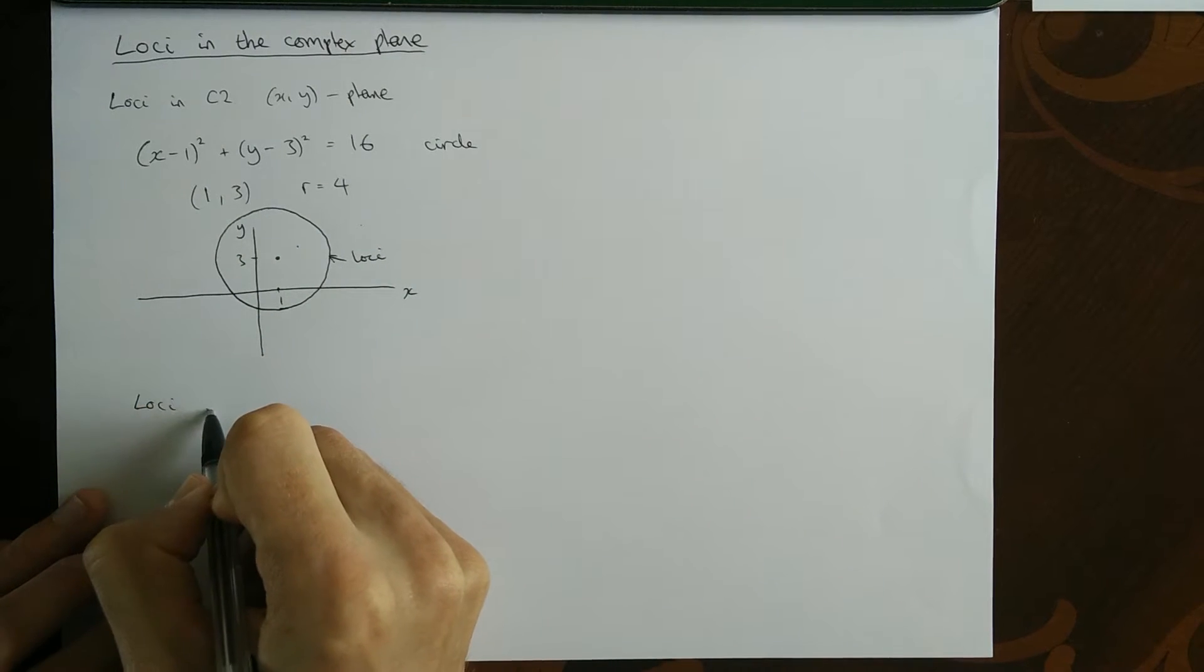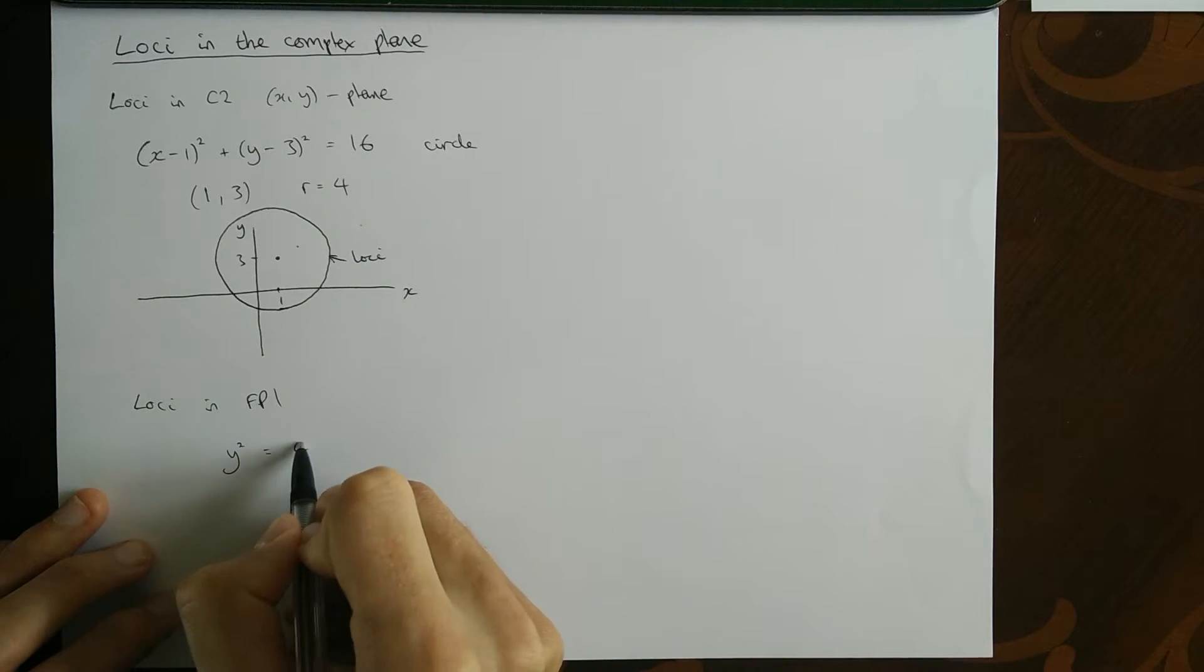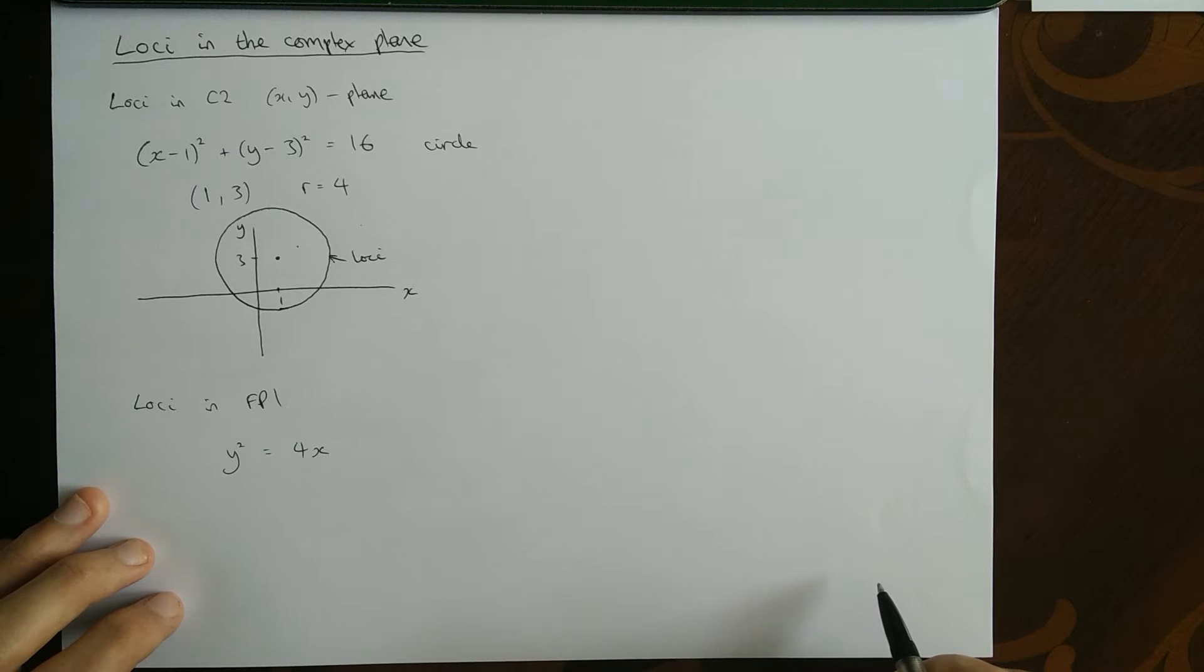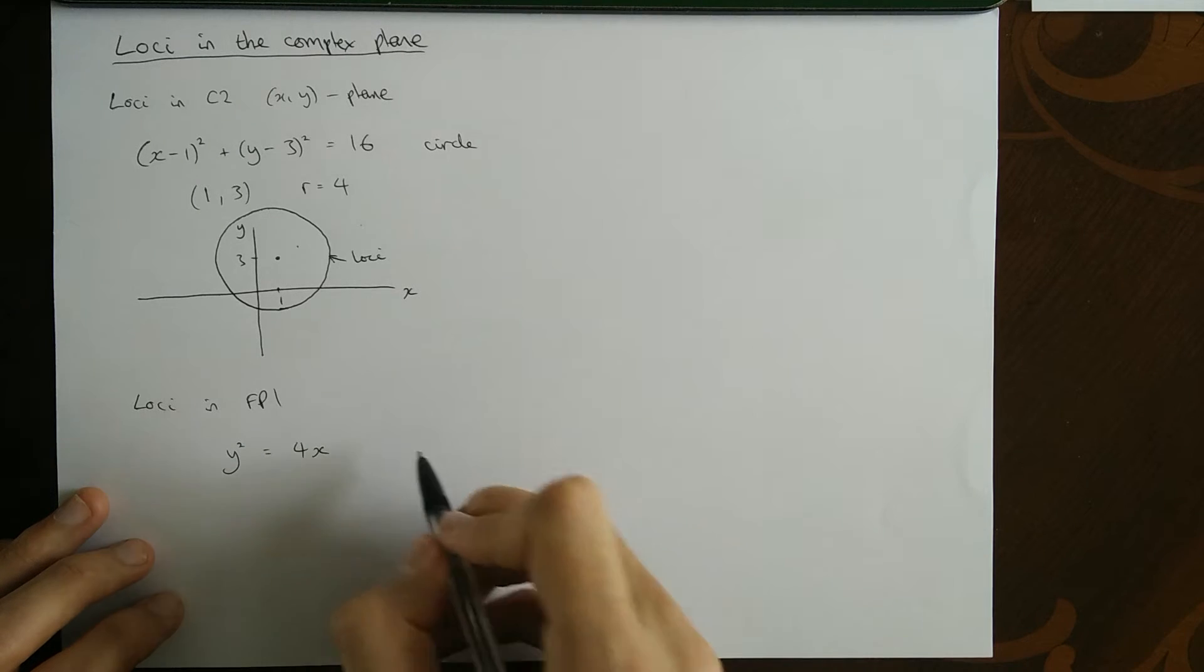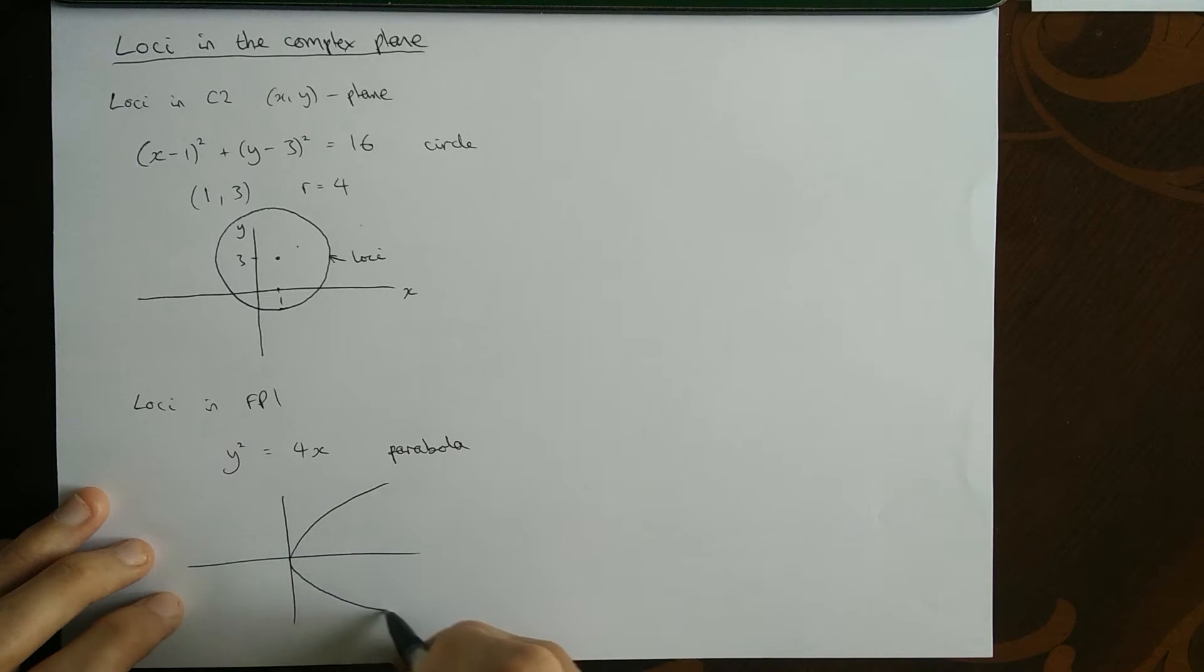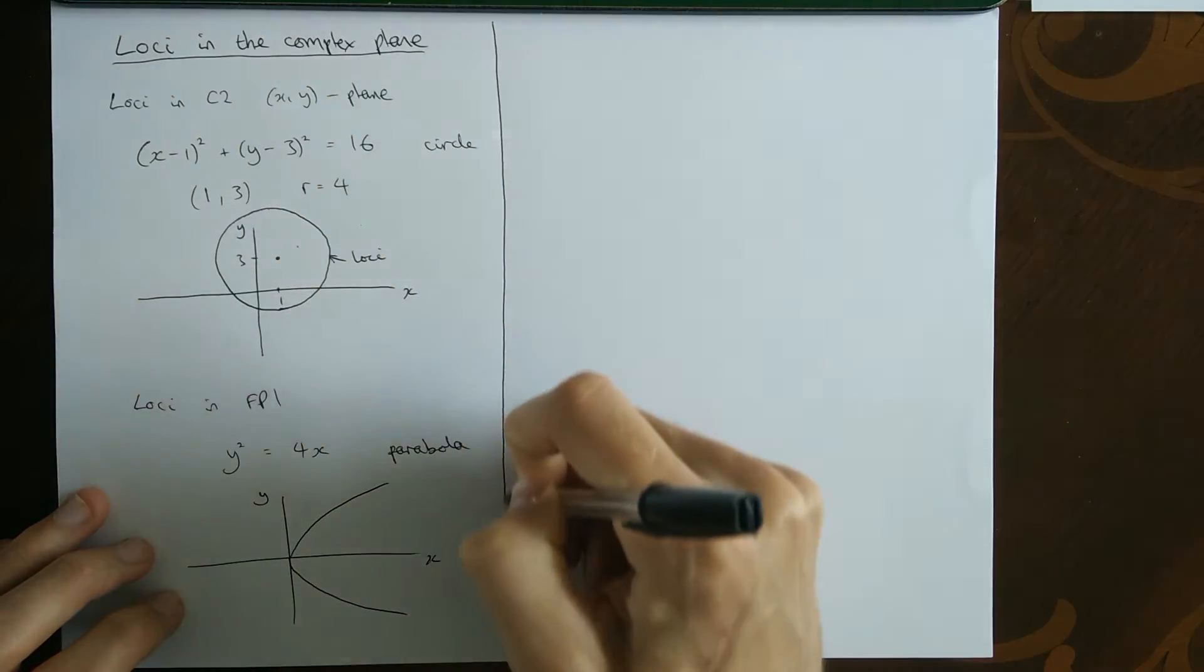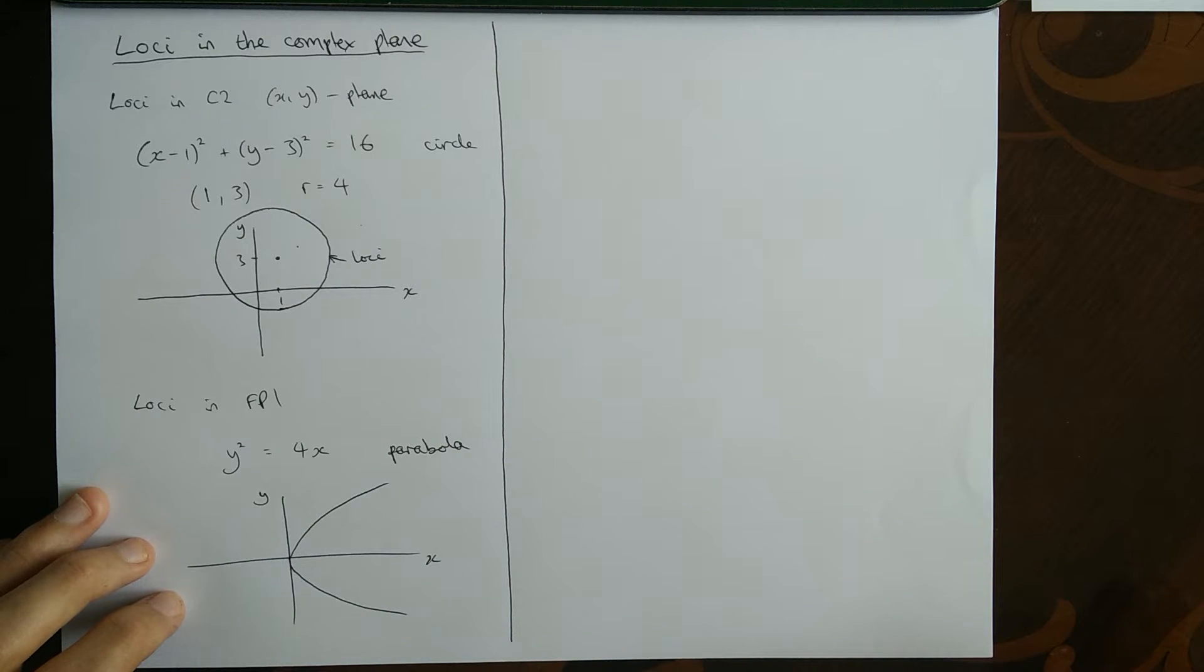Then loci in FP1 as well. You've done something along the lines of y squared equals 4x. Do you recognize what that is? Yeah, that's the equation of a parabola. So I can draw that down. Looks a bit like this. It's kind of like an x squared curve, but because you've got the y squared, it's on its side, right? It's more like a y squared curve. You may know just about the focus and directrix and stuff like that. I'm not doing that today though. So there's some examples of loci.